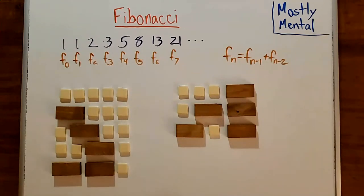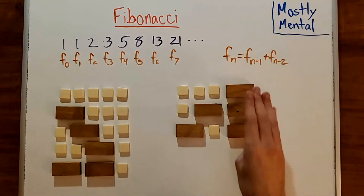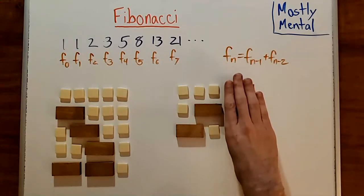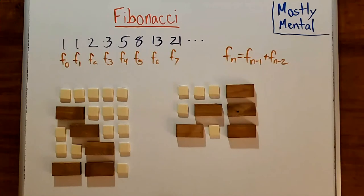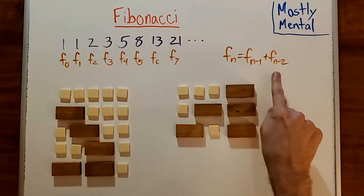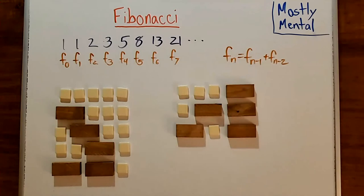And similarly, the last domino here is fixed, but the rest can be tiled in F sub n minus 2 ways. And so, that gives us F sub n is F sub n minus 1 plus F sub n minus 2, as expected.